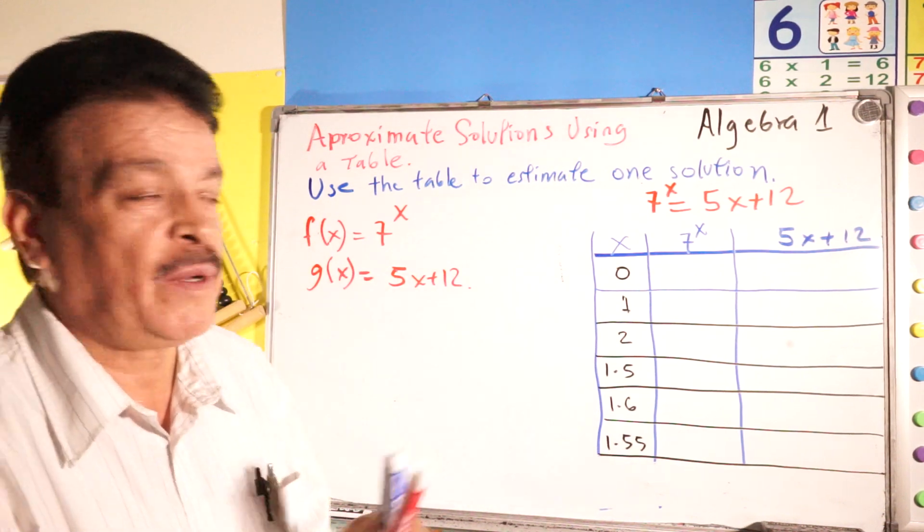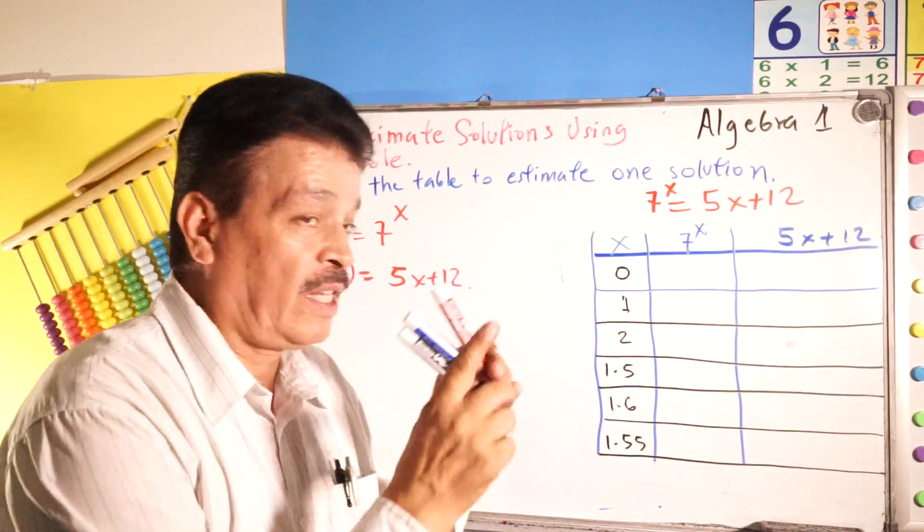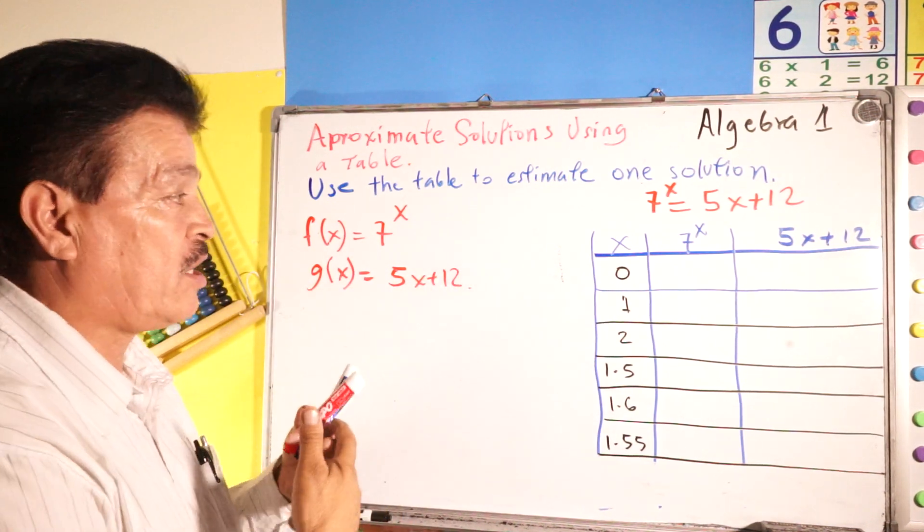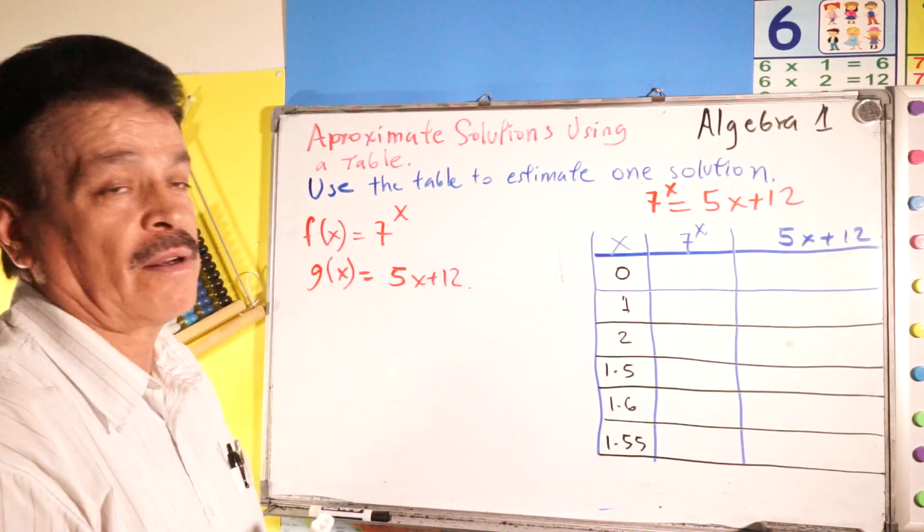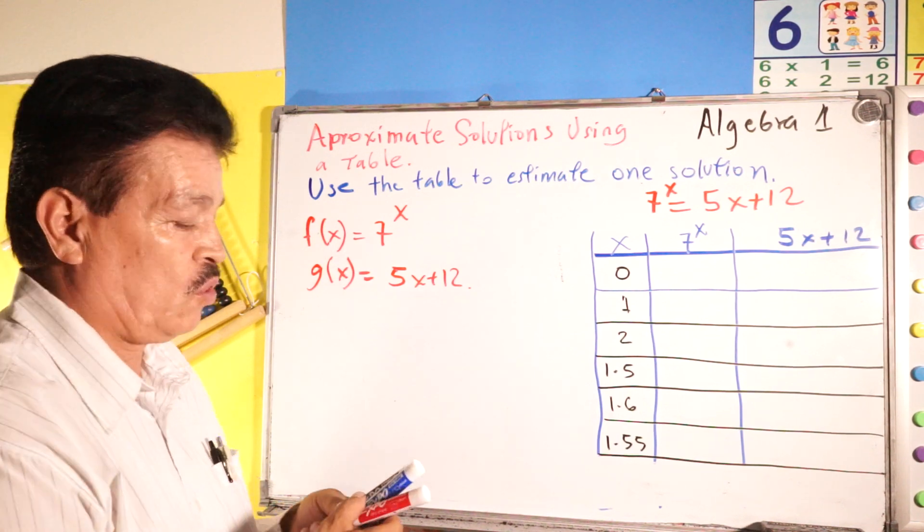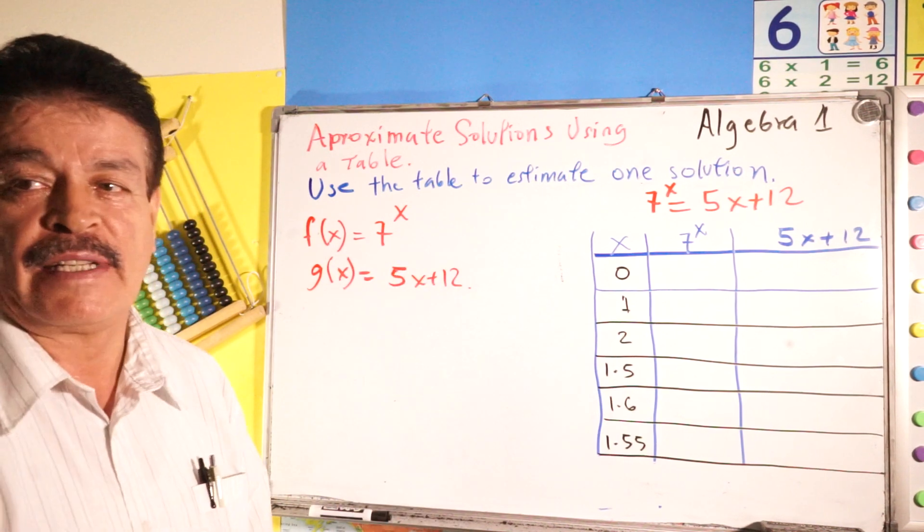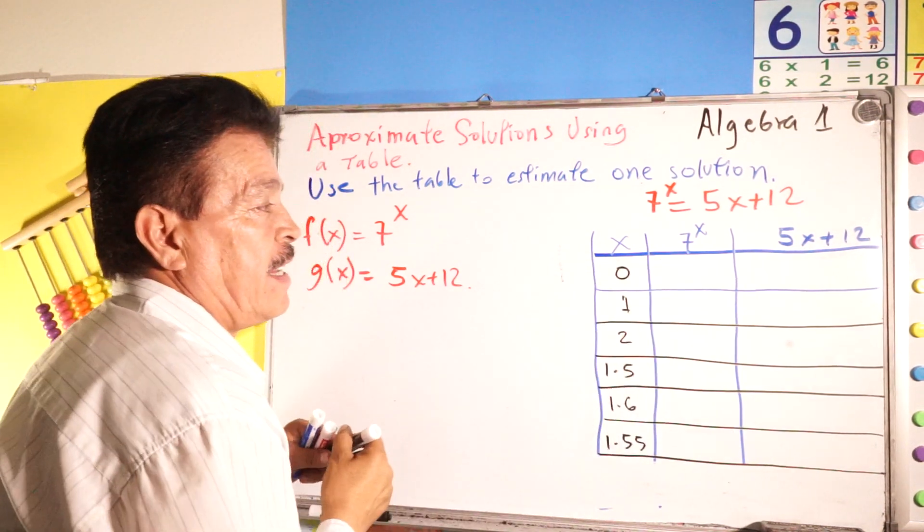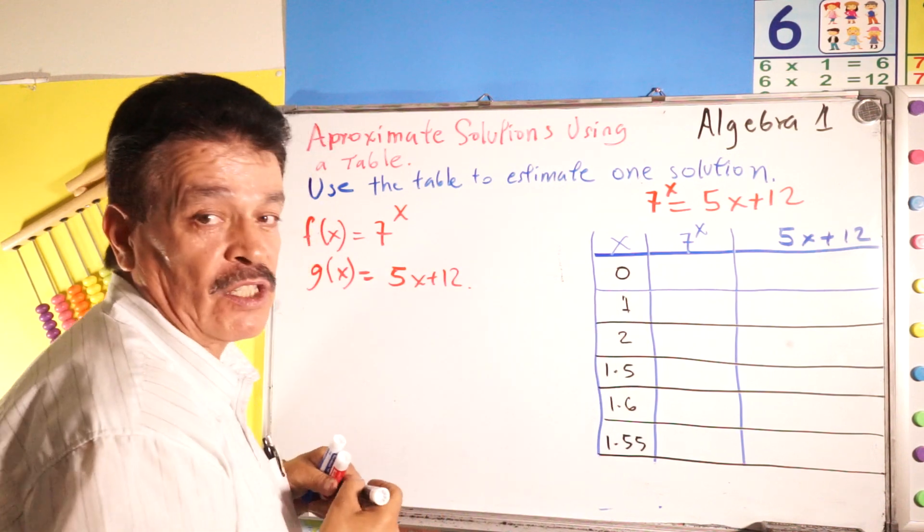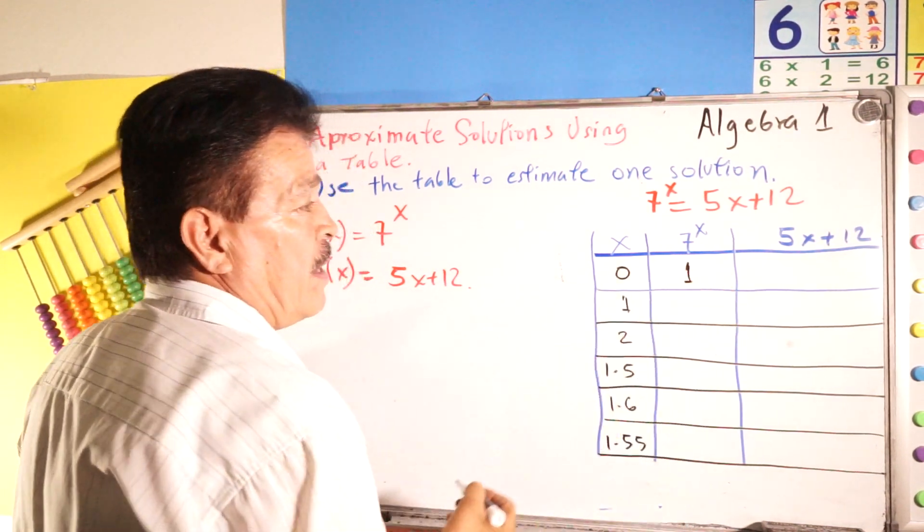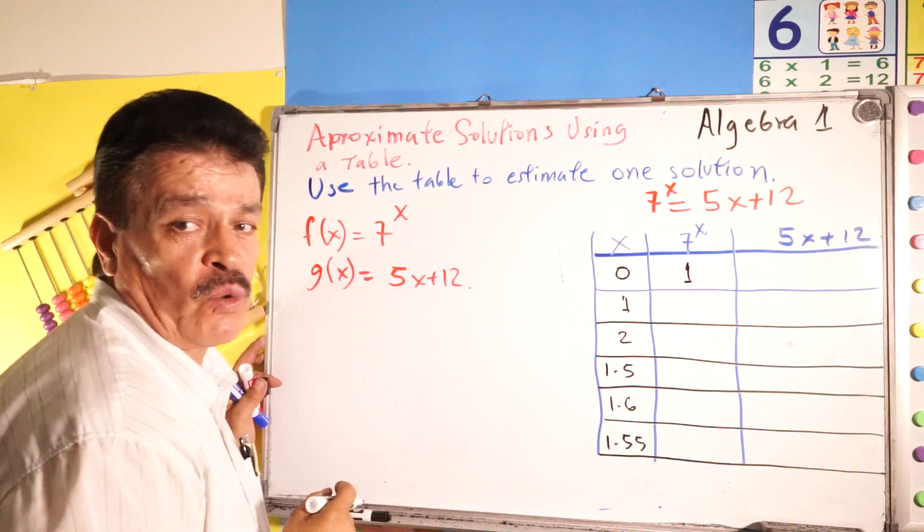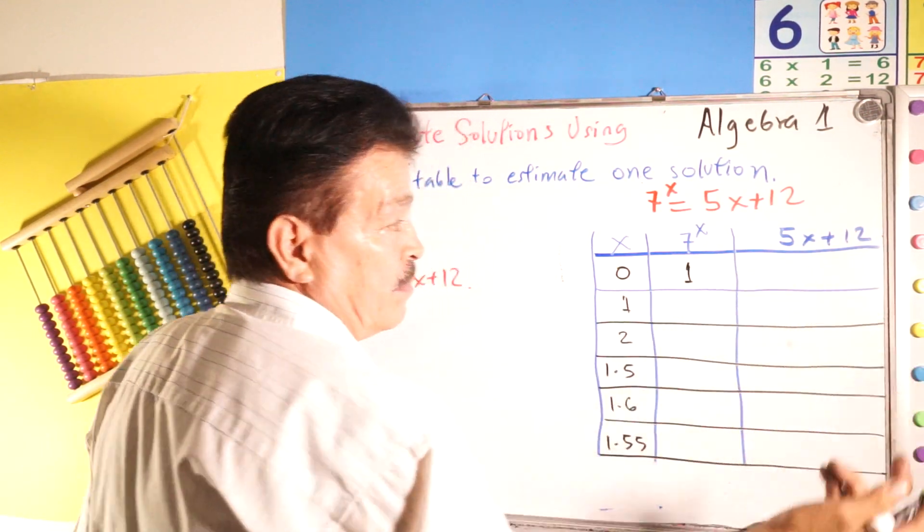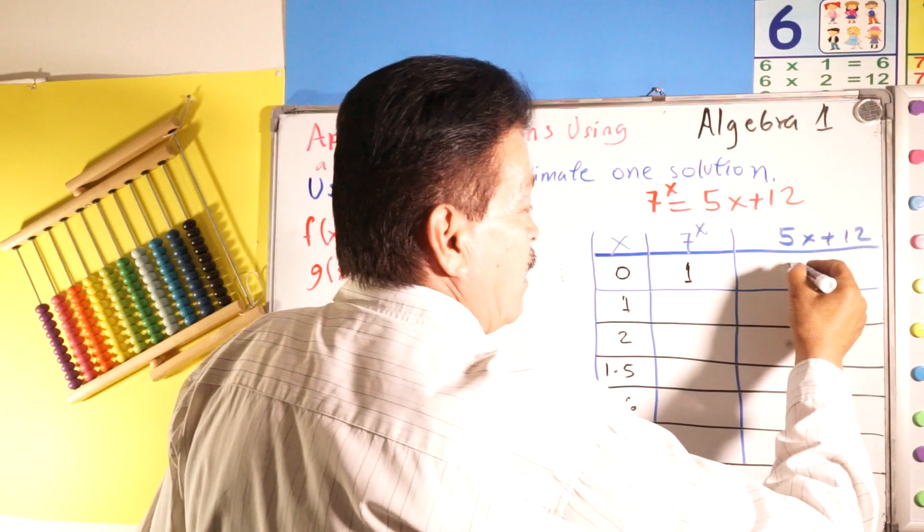In this way, we think about we have to make the equals, the closer numbers, more and more, and then that number will be the solution. Let's solve the table. When X is zero, how much is 7 to the X power? Is one. How much is 5X plus 12? It is 12.